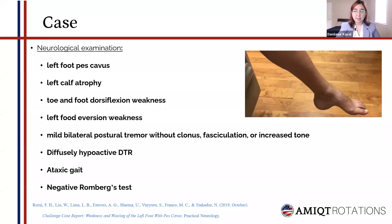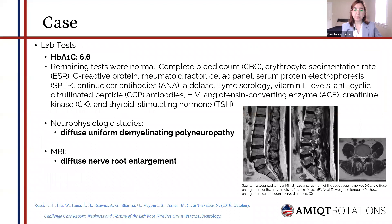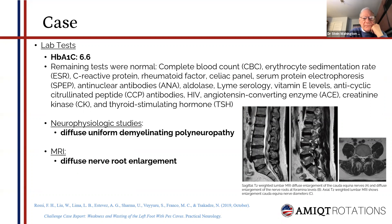His deep tendon reflexes were diffusely hypoactive. He had ataxic gait and his Romberg test was negative. His lab tests were normal aside from elevated hemoglobin A1c levels. Complete blood counts, ESR, CRP, ANA, HIV, anti-CCP levels, and TSH were all tested and they were all normal.